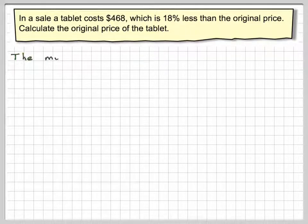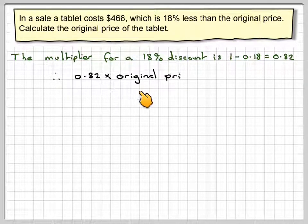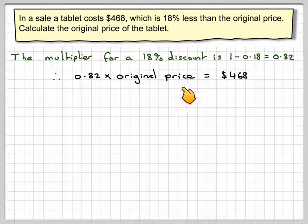So what you do, you need to set it out like this. The multiplier for 18% discount is 1 minus 0.18. So the multiplier for a percentage discount of 18% is 0.82. So what we have is 0.82 times the original price, which is what we're trying to calculate,